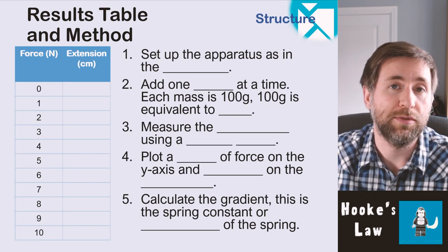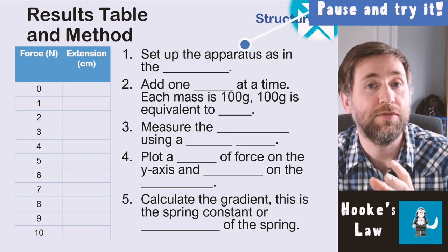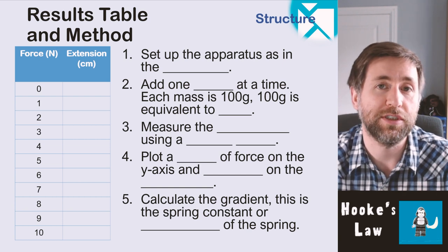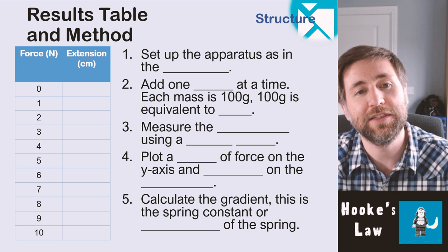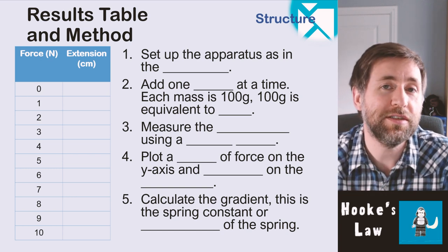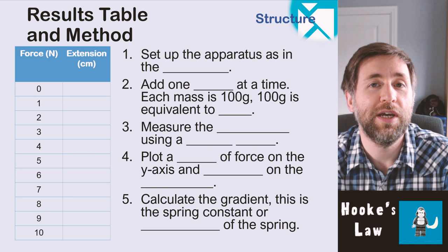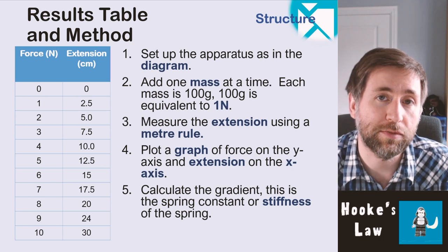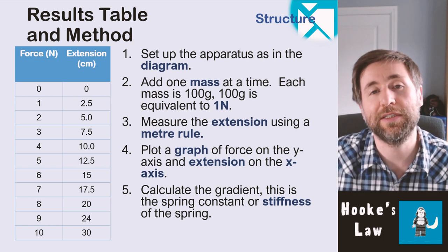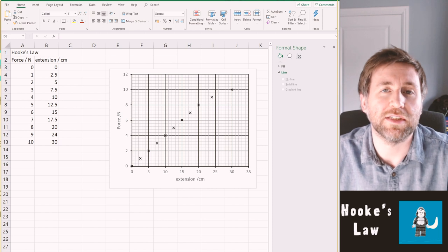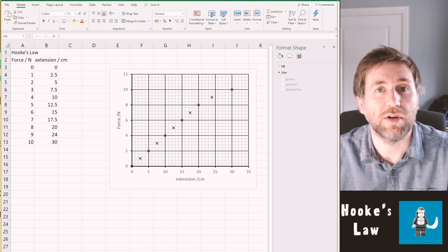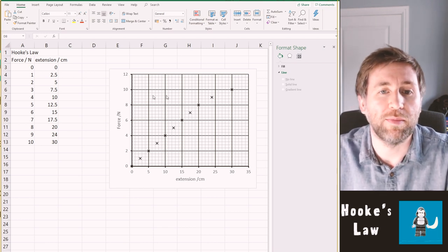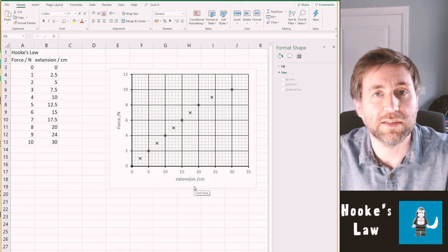Here's a method and a results table: force is the independent variable on the left, and you're going to increase to about 10 newtons or more depending on your situation at school. Extension goes on the right — it can be in centimetres or meters, but when you do the energy analysis you need to convert to meters. I've put in some typical results which you're welcome to use to practice plotting graphs. We want to get a spring constant for this data, so I'm going to pop this into Excel and plot a graph — remember force is on the y-axis and extension is on the x-axis.